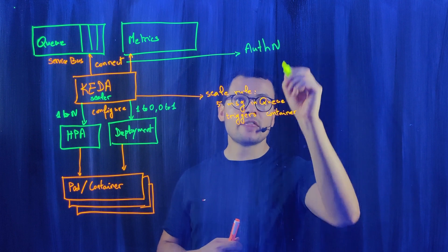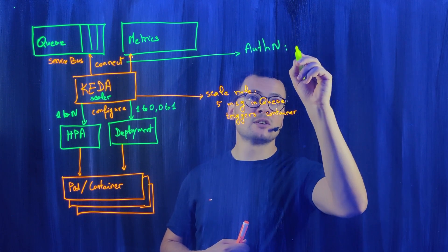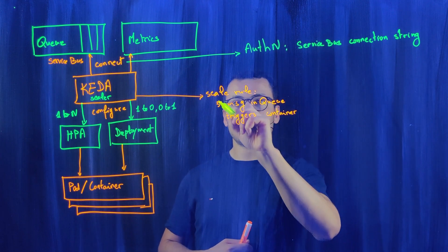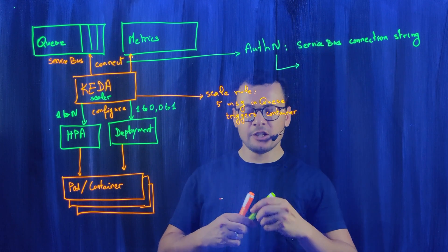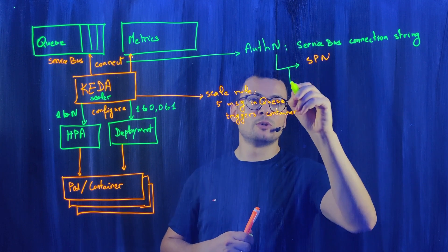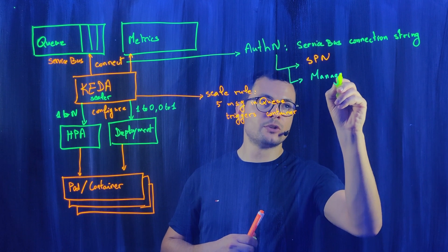For Service Bus, that authentication could be done either using a Service Bus connection string. This data will be saved into the scale rule. That authentication could also be done using a service principal, an SPN. Another option is managed identity, which is the preferred way.